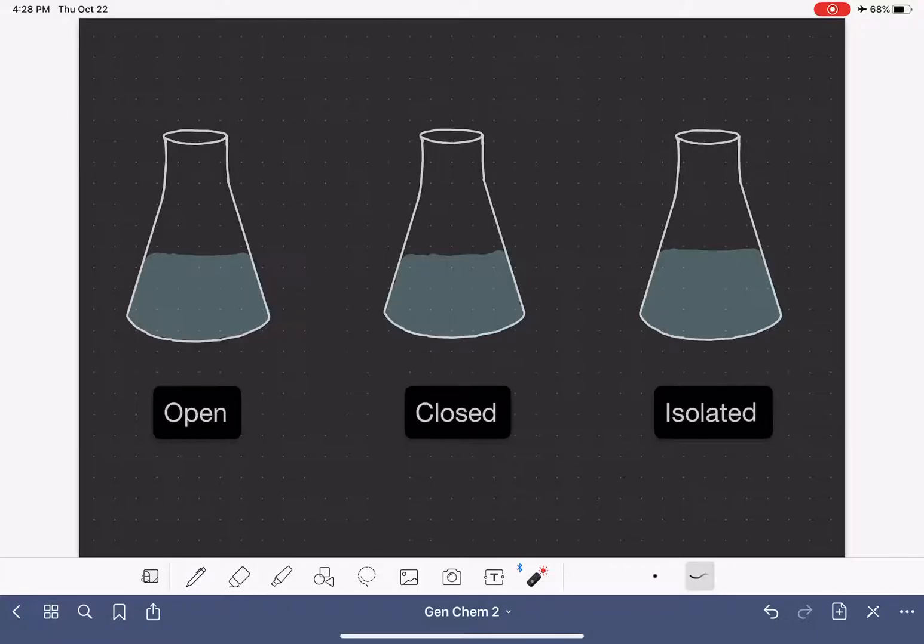In science, we recognize three different types of systems: the open system, the closed system, and the isolated system. And in this video, I'm going to give you a definition of each of these three types of systems and explain how they're similar and different.